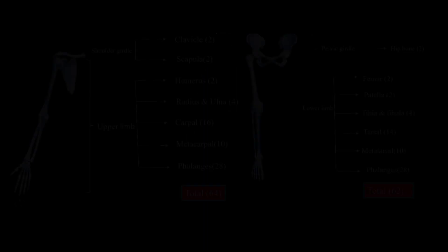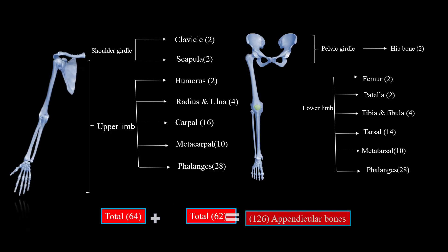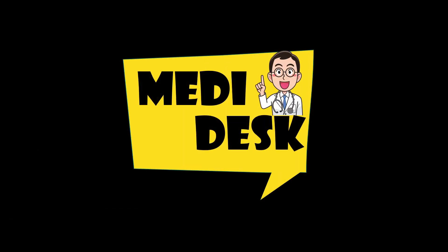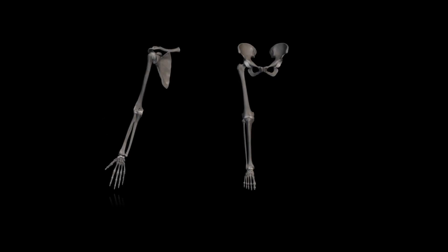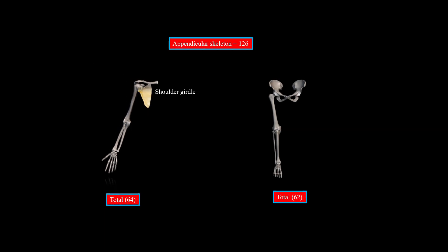This is Dr. Punkers from MatriDex. The first question is: what is the Appendicular Skeleton? The Appendicular Skeleton is the part of the skeleton that includes bones of the shoulder girdle with the upper limb and the pelvic girdle with the lower limb. Total bones in the Appendicular Skeleton are 126.